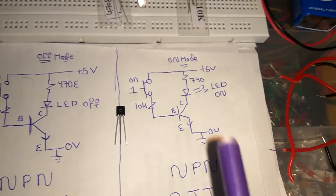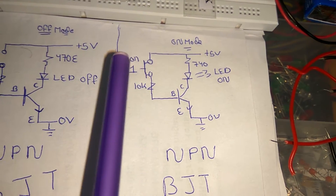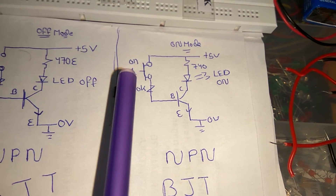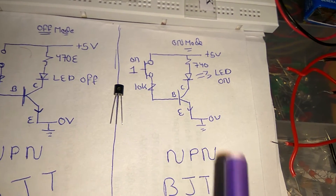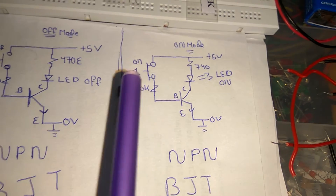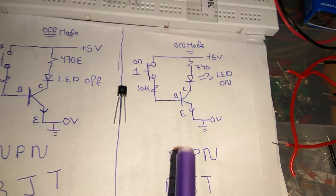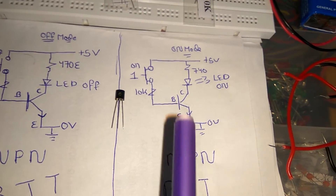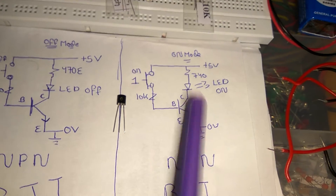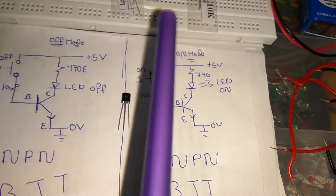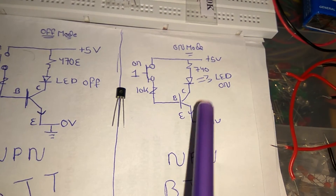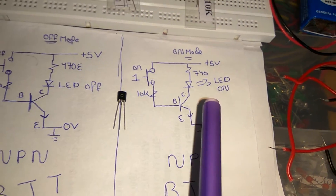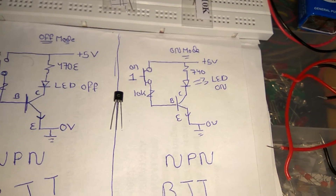Now let's talk about on mode. When the switch is on, base is at one and emitter is at zero, so base is high and emitter is low. There is a potential difference, so current flows through the loop via the collector and the LED glows.